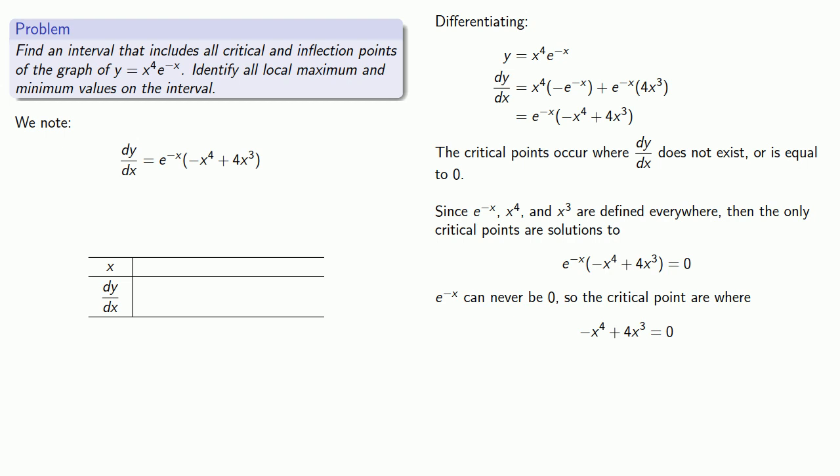So again, we'll try to factor by identifying a common factor to all the terms. And we can remove a factor of x cubed. And again, we have product equal to zero, so we know that one of the two factors has to be zero. And so that gives us critical points at x equals zero and x equals four.